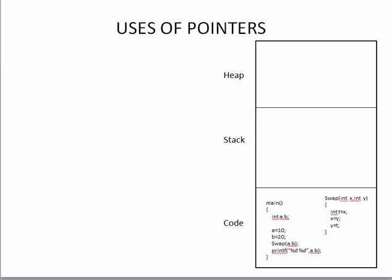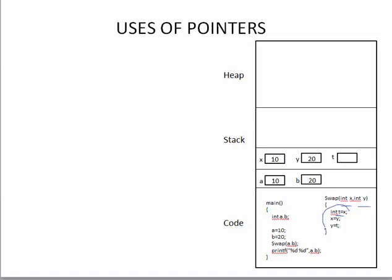Once the program is loaded, the main function starts and memory is allocated for variables a and b. When main calls the swap function, memory is allocated for x, y, and t inside swap, and the values of a and b are copied into x and y. When the swapping is done, it only happens within the swap function's activation record, because swap cannot access the data inside main's activation record. One function cannot access the activation record of another function — so this approach simply does not work.